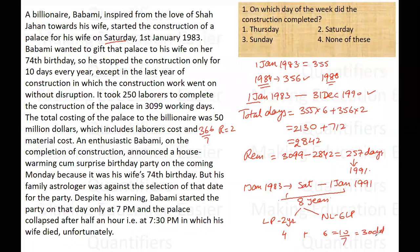3 odd days means the day shifts 3 days ahead. If 1st January 1983 was Saturday, adding 3 days gives Sunday, Monday, Tuesday. Therefore, 1st January 1991 would be Tuesday.